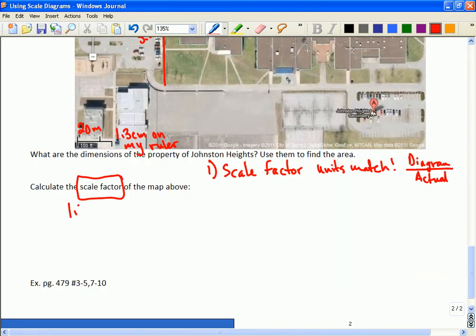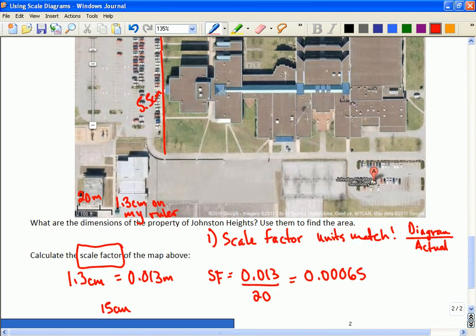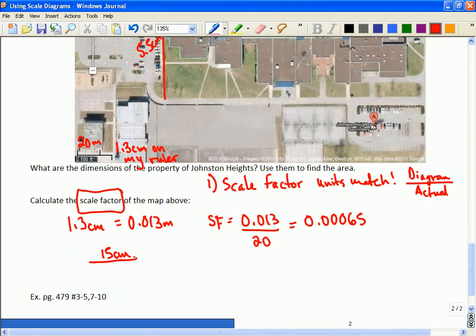Okay. So, I'll just quickly give you 1.3 centimeters is 0.013 meters. So, my scale factor is going to be 0.013 divided by 20. So, what this is saying is to get from the real world, 20 meters in the real world multiplied by this number shrinks it down to the diagram.